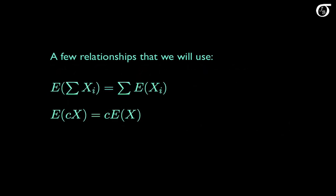Here are a few tools that I'm going to take as a given and use without proof. I'm going to use the fact that the expectation of a sum is the sum of the expectations, and also that if we want the expectation of a constant times a random variable, we can take that constant outside of the expectation.